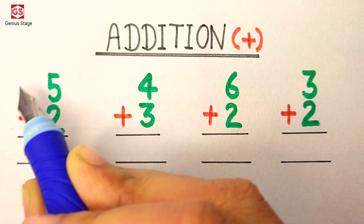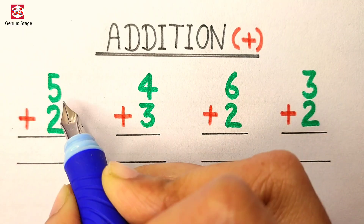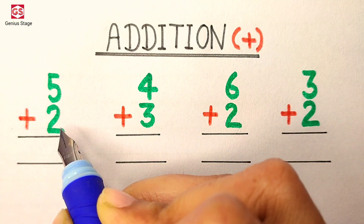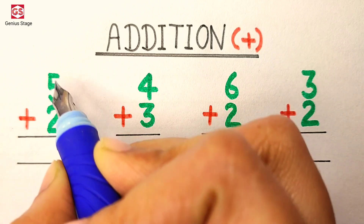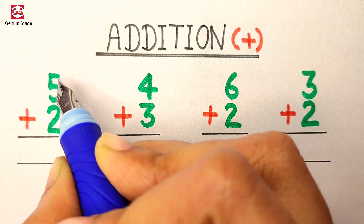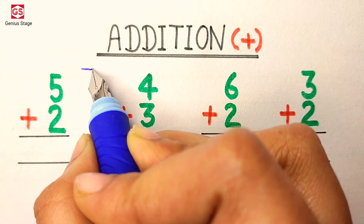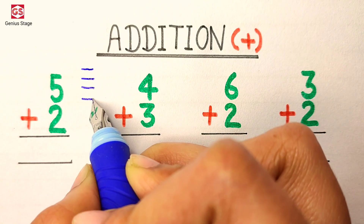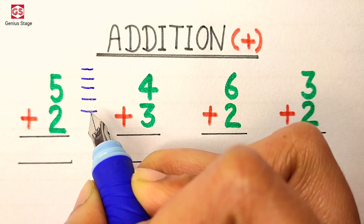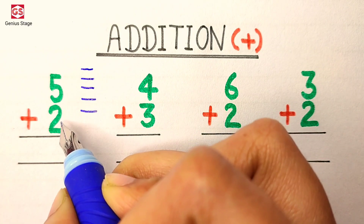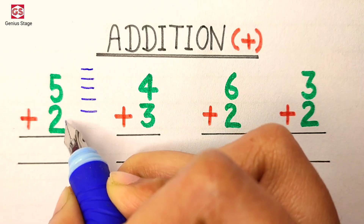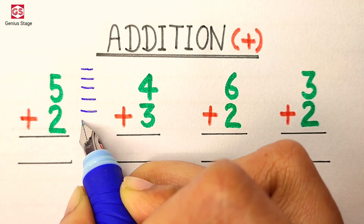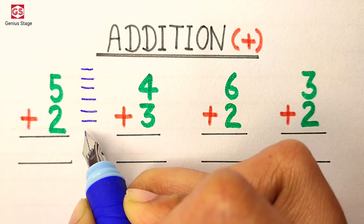In the first question, we need to add 2 to 5. So first we will draw 5 lines: 1, 2, 3, 4, 5. Below the 5 it says 2, so we will draw 2 more lines: 1, 2.